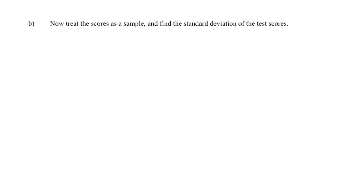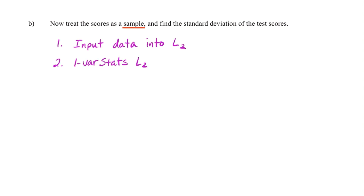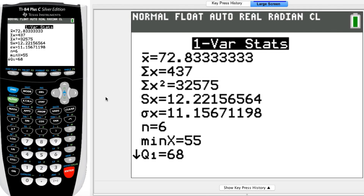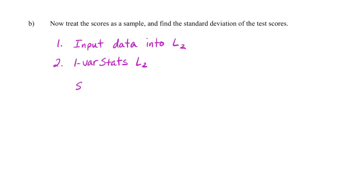Jumping quickly to Part B — they're saying now treat the scores as a sample and find the standard deviation of the test scores. That means we're still going to input our data into L2, but we already have it. We run our one-var stats function again. Going back to our calculator where we still have our results — remember, sample standard deviation is represented by S. We already have our value of S, the sample standard deviation, and it's approximately 12.22. And we're all set finding the sample standard deviation of our data.